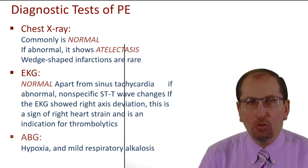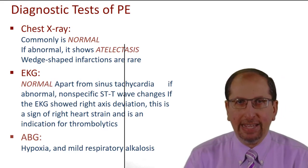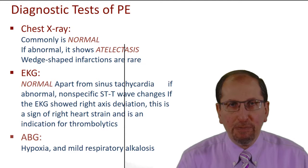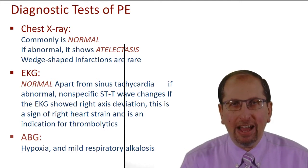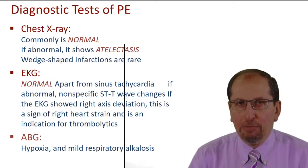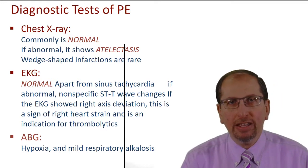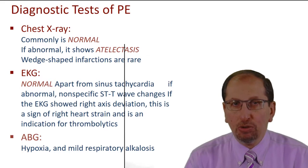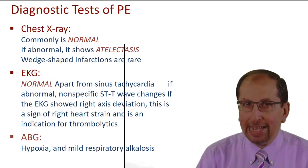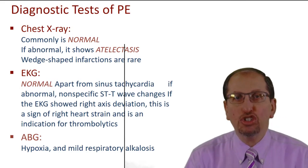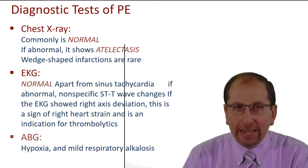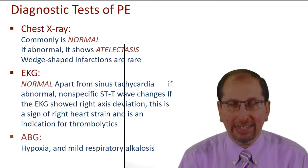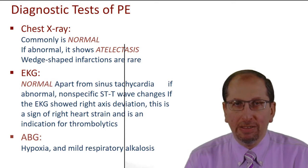On ECG, the most common finding is sinus tachycardia. Tachycardia is so central to pulmonary embolism that if a patient has a normal heart rate, it's very highly unlikely to be pulmonary embolism. Other abnormalities include nonspecific ST-T wave changes. If the ECG shows right axis deviation, this is a sign of right heart strain, indicating a large embolism obstructing a big branch of the pulmonary artery — this is an indication for thrombolytics.